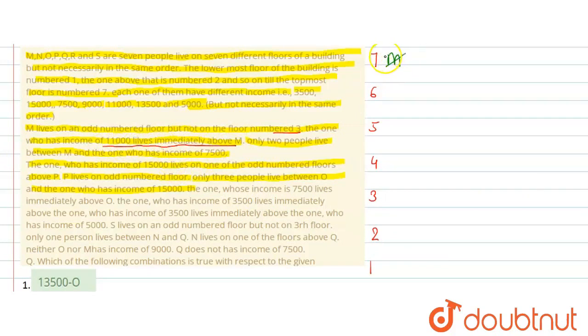So M is here. In this case M is on the bottom, and M is not on third floor, so M comes on bottom floor here. The person with salary 11000 is just above M, so that person comes here. Then given is only two people between M and the one whose income is 7500, so M is here, one, two, and here comes 7500. In this case M is here, one, two, here comes 7500.